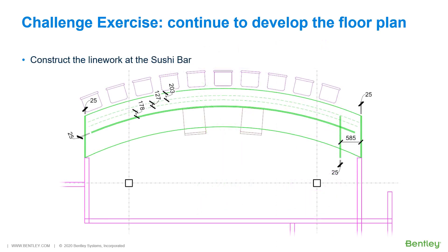As shown here, construct line work at the sushi bar based on the dimensional data. You may match the symbology from the lounge area countertop. Use strictly the manipulation tools. Modification will be covered in the next module.